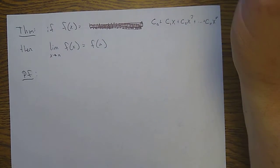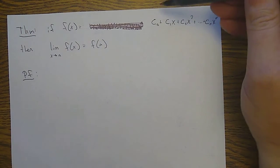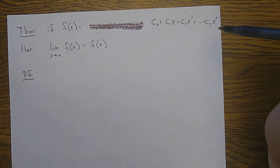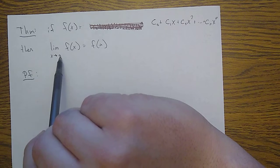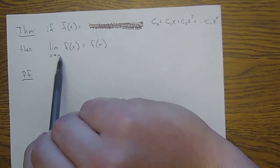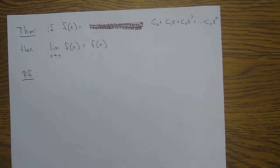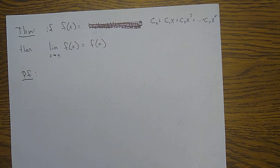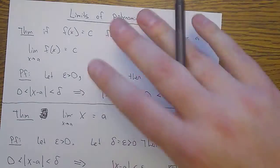Now let's do that in full generality. If f of x is any polynomial — so it has a constant term c naught, an x term c1x, and it goes up to c sub n times x to the n — then I'm going to tell you that the limit as x goes to a of f(x) is the same as f(a), meaning it's the same answer you would get by just plugging a in. Let's prove that. This is the first proof of a limit that is not going to start with 'let epsilon be greater than zero.'